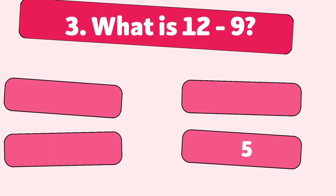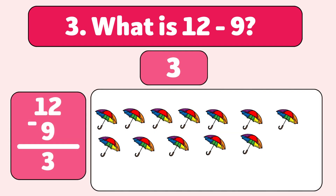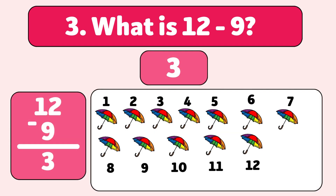What is 12 minus nine? The answer is three. We start with 12 umbrellas and let nine blow away. Let's count: one, two, three, four, five, six, seven, eight, nine. You're doing amazing.